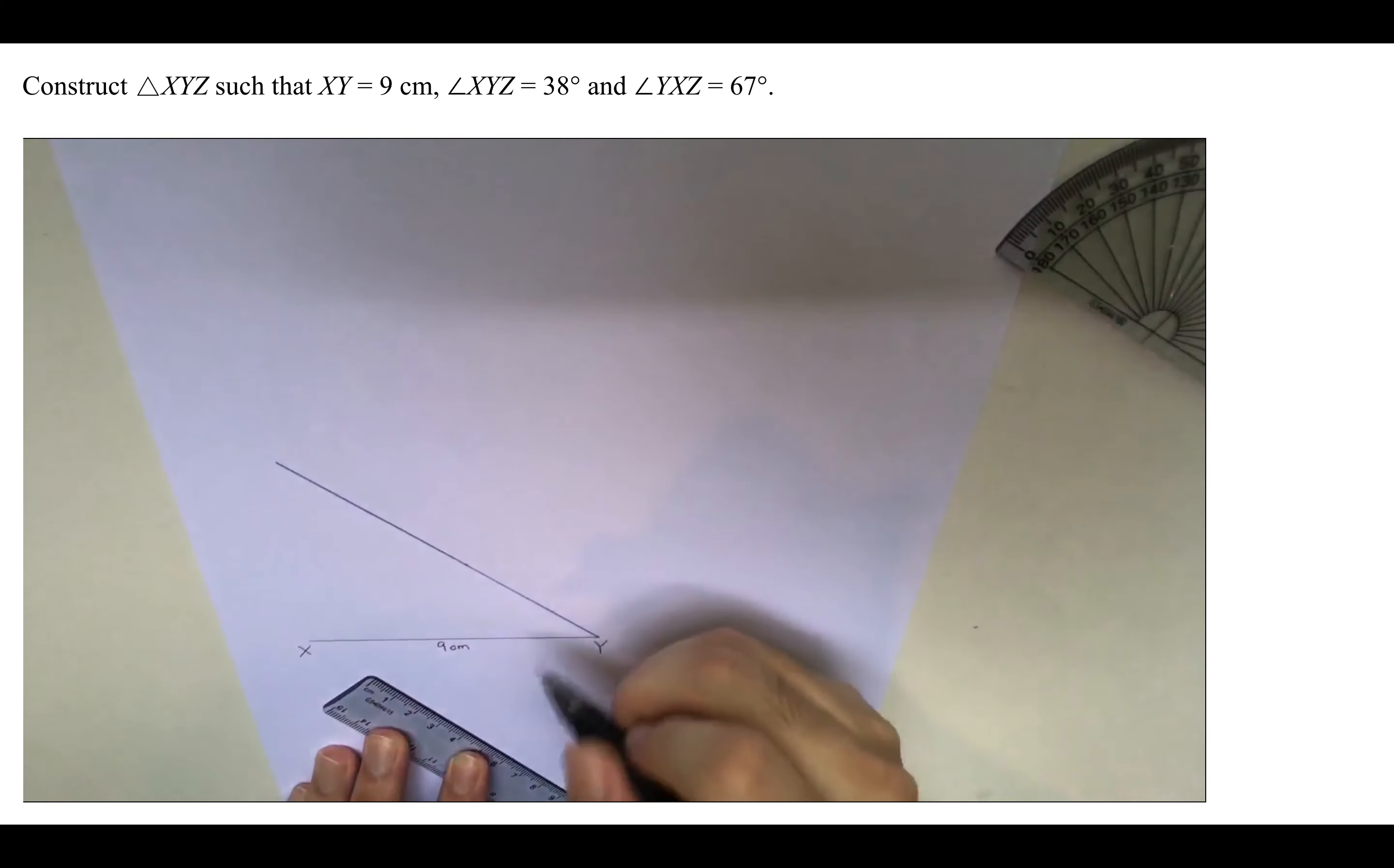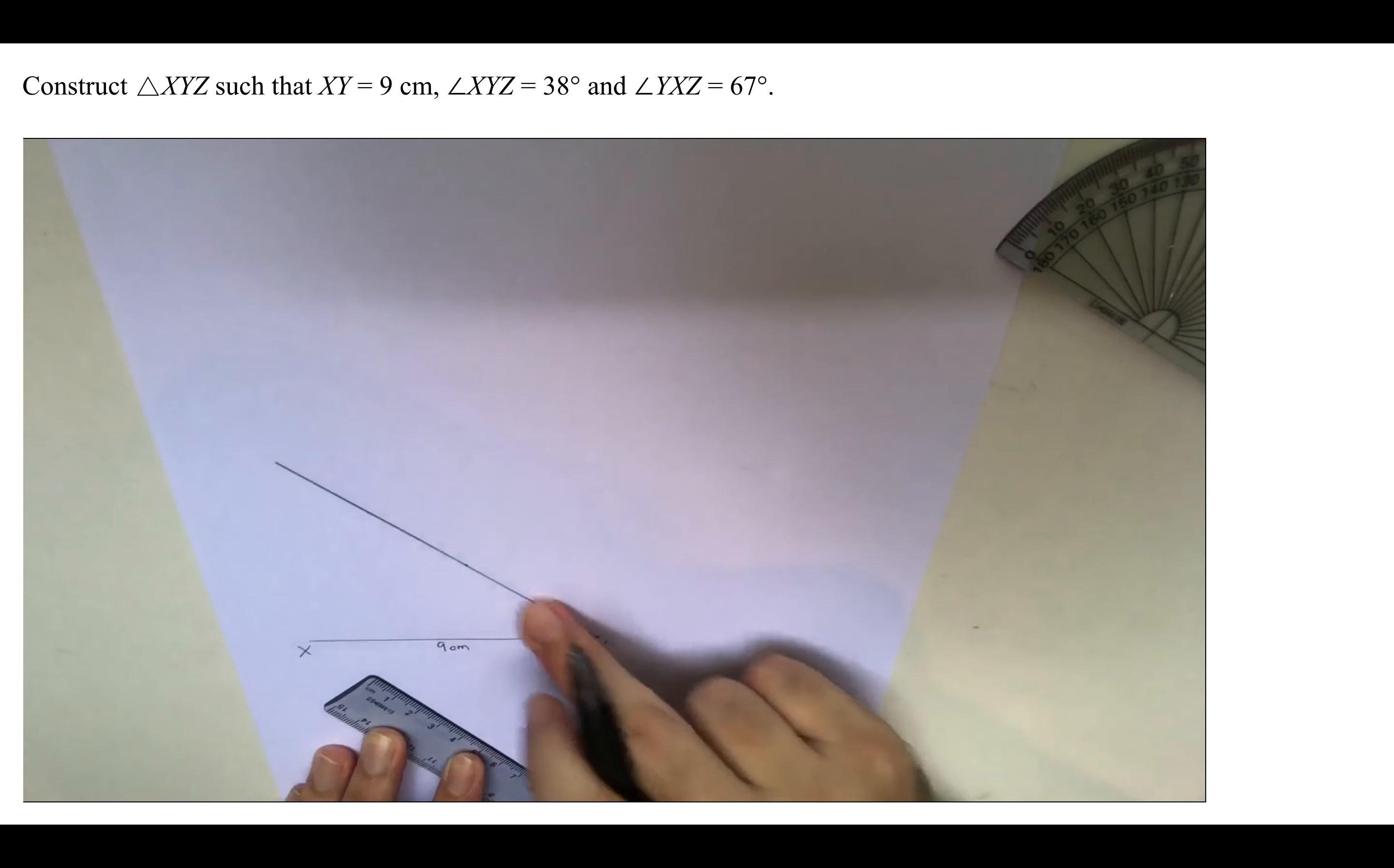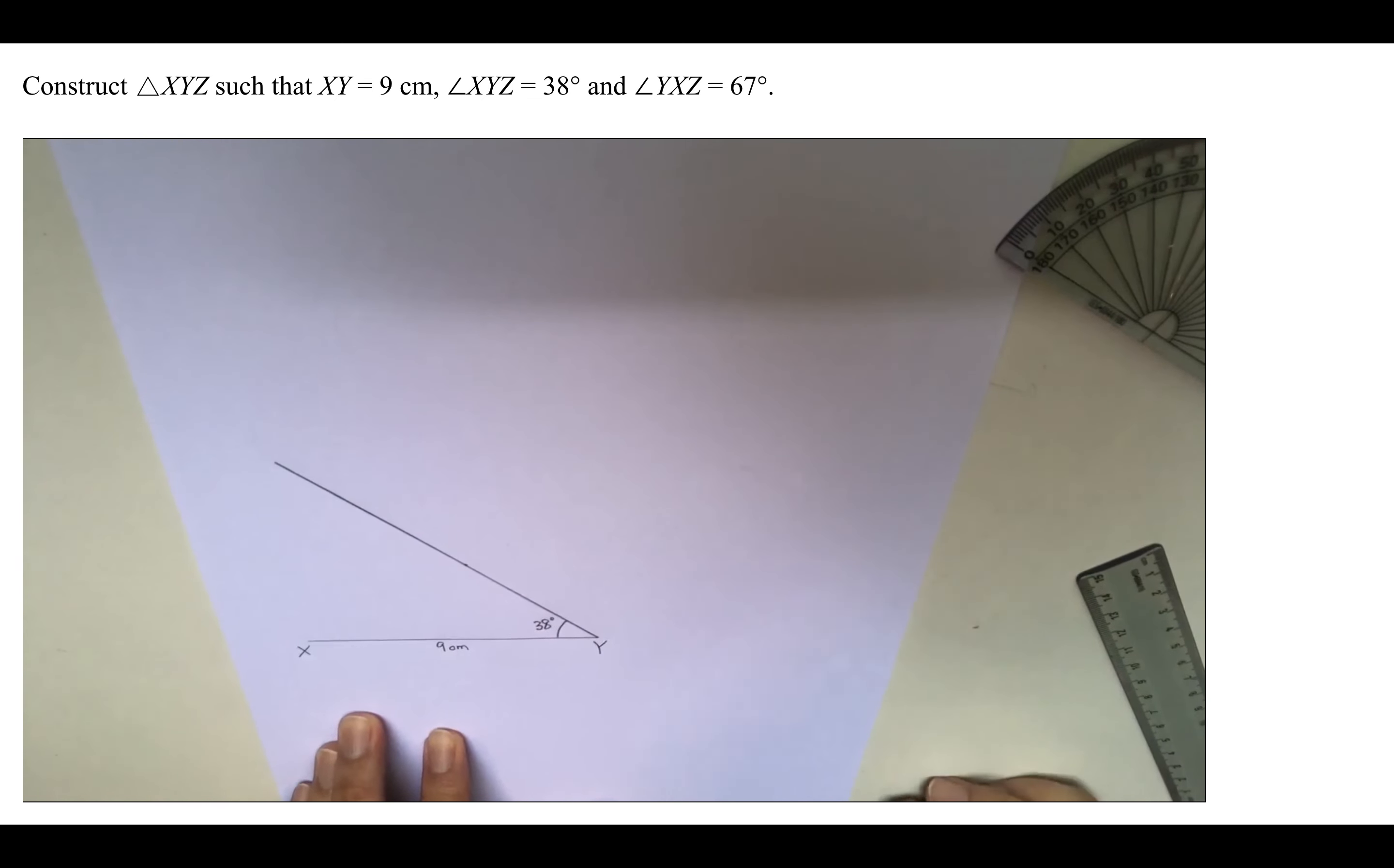Label the information that we have. In this case, we know the angle here is 38 degrees. What this tells us is that point Z will be somewhere along this line, and we are going to find out exactly where it is shortly.